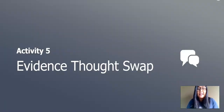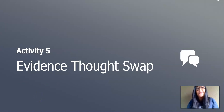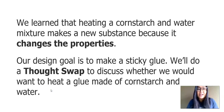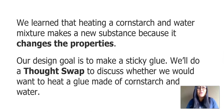The last part of our lesson is we will do an evidence-thought swap. If you remember this from a couple of lessons back, I will ask some questions, you'll get to pause the video, jot down your answer, and then I'll share my ideas next. We learned that heating a cornstarch and water mixture makes a new substance because it changes the properties. Our design goal is to make a sticky glue. We'll do a thought swap to discuss whether we would want to heat a glue made of cornstarch and water.